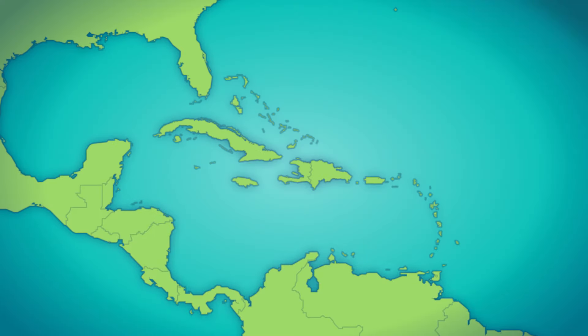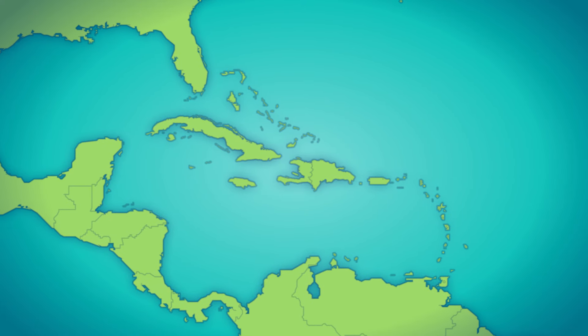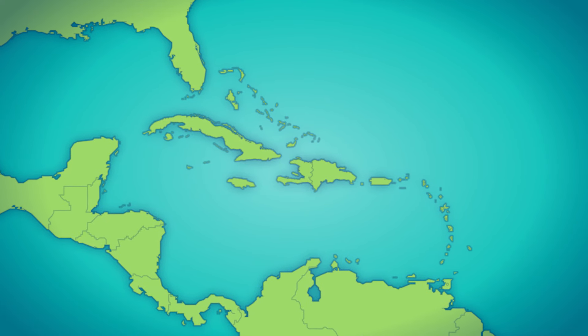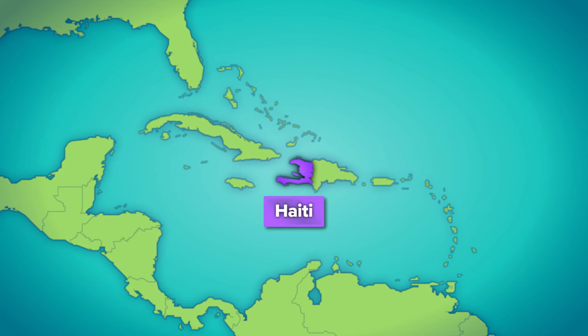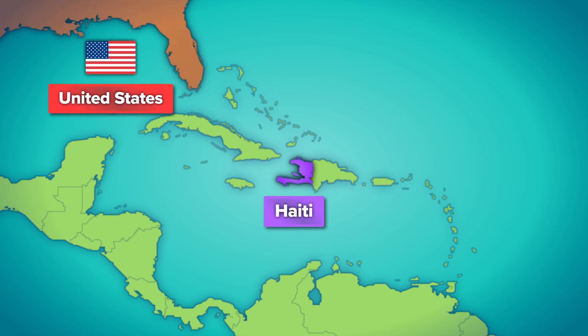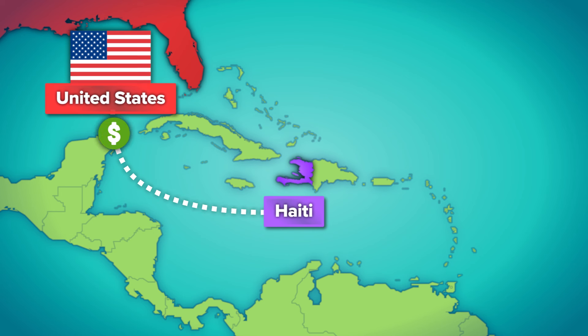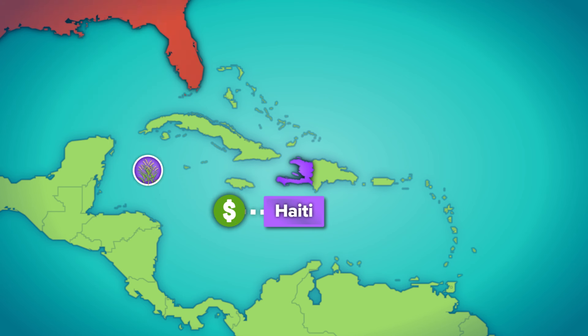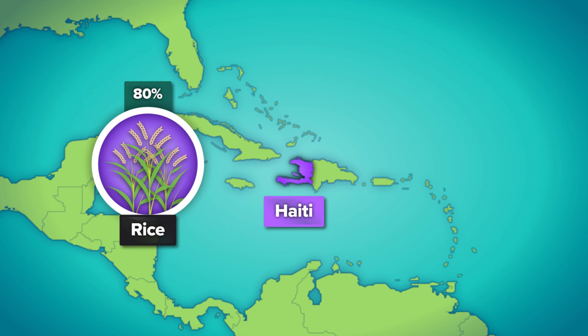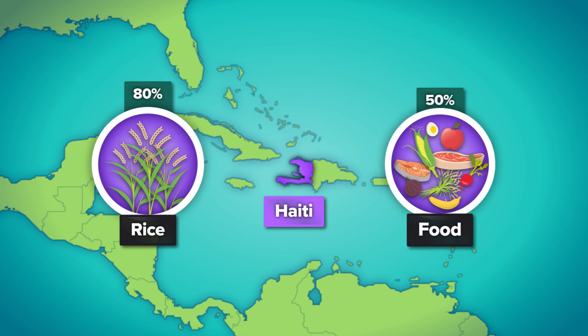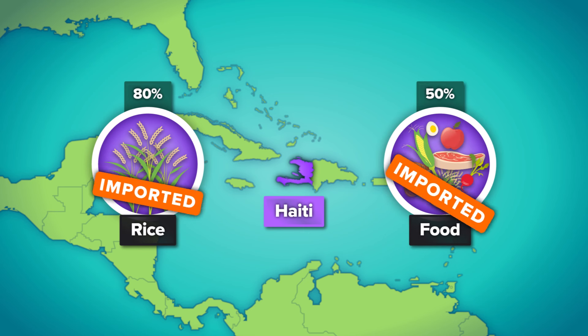Because of Haiti's history of foreign exploitation, it hasn't been able to sustain the agricultural and financial resources necessary to feed its population. So, Haiti relies on aid from other richer countries, like the US. Today, over 80% of rice, and nearly half of all the food consumed in Haiti, is imported.